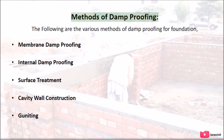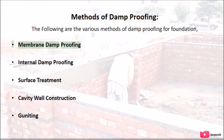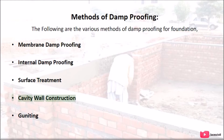Methods of damp proofing: the following are the various methods of damp proofing for foundations — membrane damp proofing, internal damp proofing, surface treatment, cavity wall construction, and guniting.